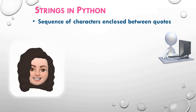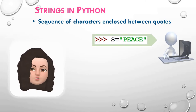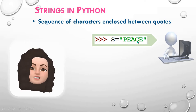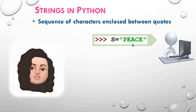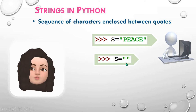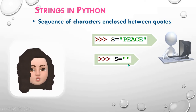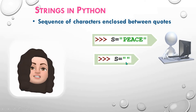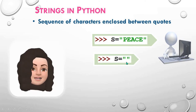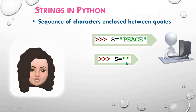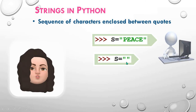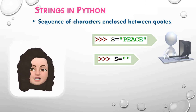Look at the first example. S is equal to, within double quotes, a set of alphabets — 'piece'. This is an example of a string. Next, S is equal to empty quotes — there is nothing inside these quotes, so this is an example of an empty string. So anything which is specified between quotes will be considered as a string.